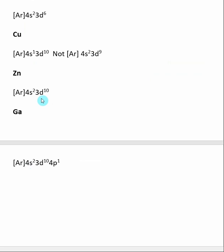After that, when we get to zinc, we have 10 3D electrons, so we don't need to steal. Zinc's electron configuration is argon, 4S2, 3D10.